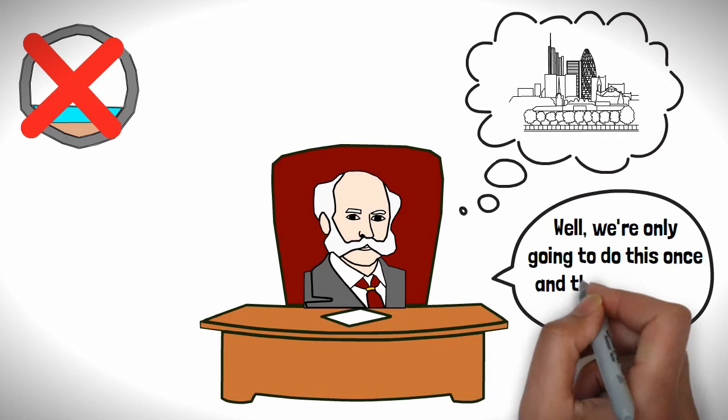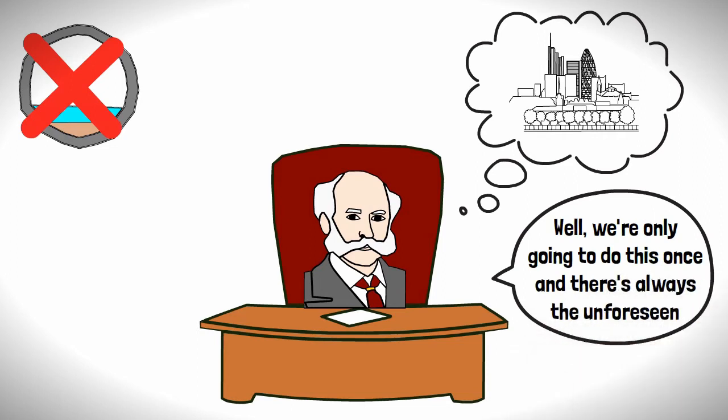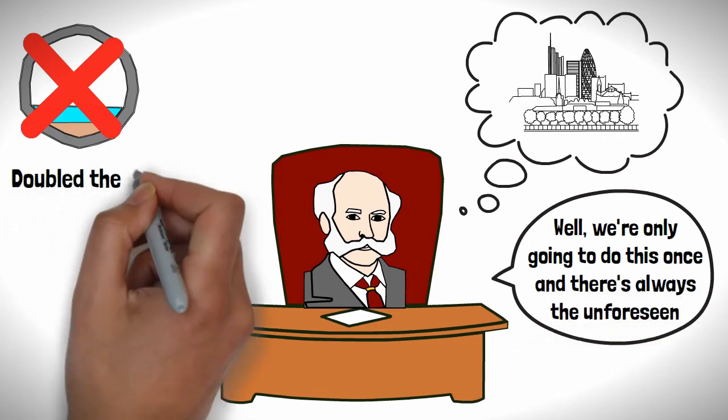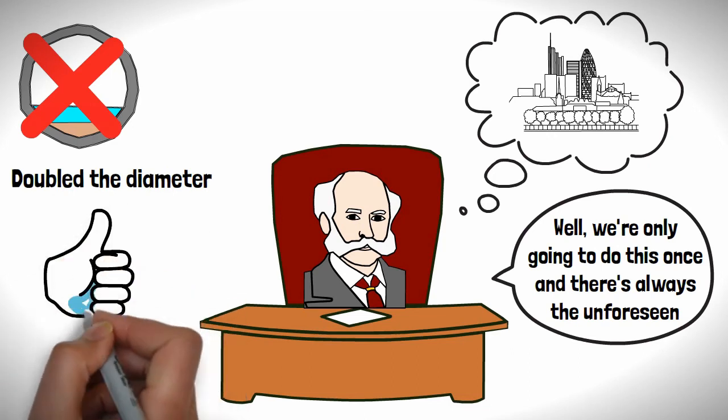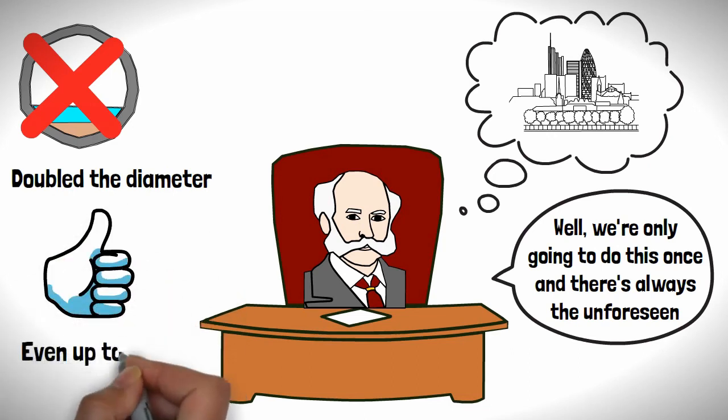for which he said, well, we're only going to do this once, and there's always the unforeseen. Bazalgette instead doubled the diameters of the sewers, and this decision has allowed for the sewers to accommodate for demand even up to the present day.